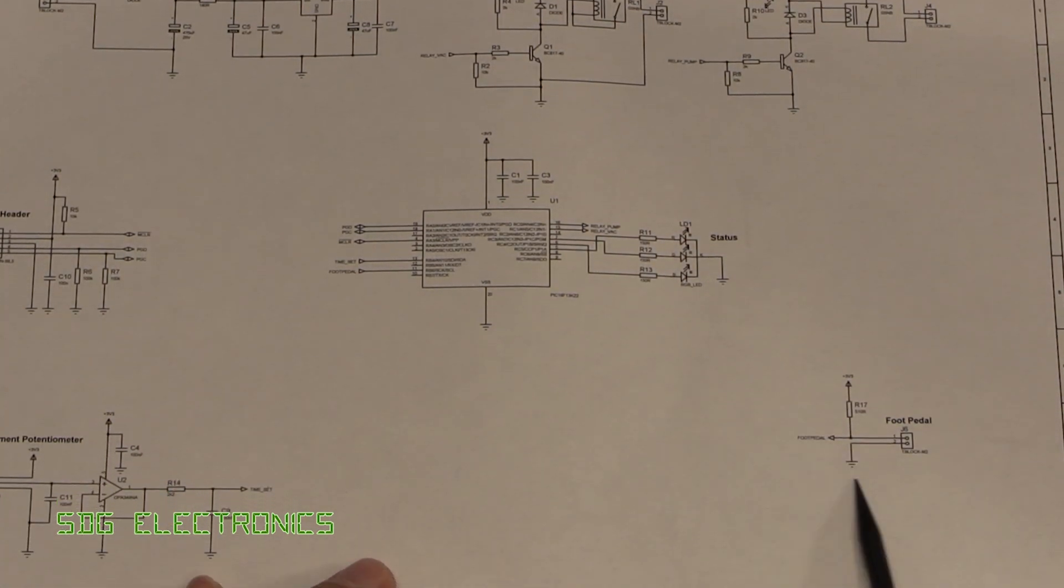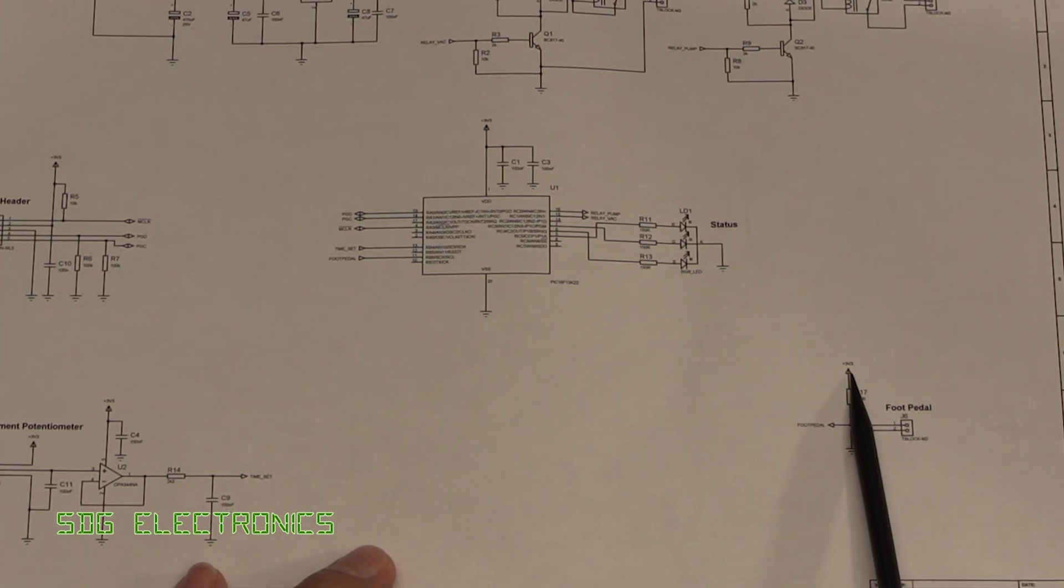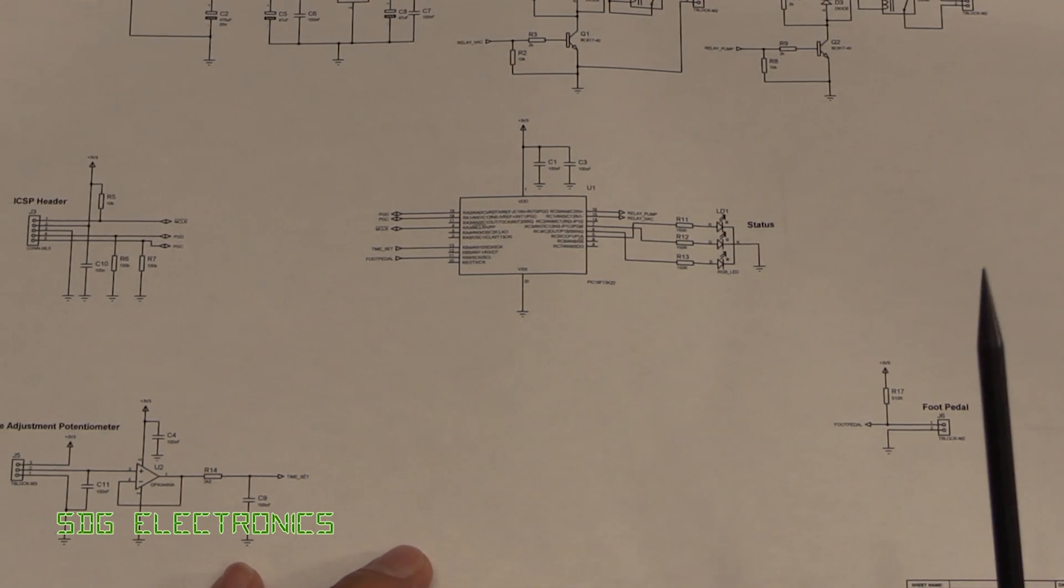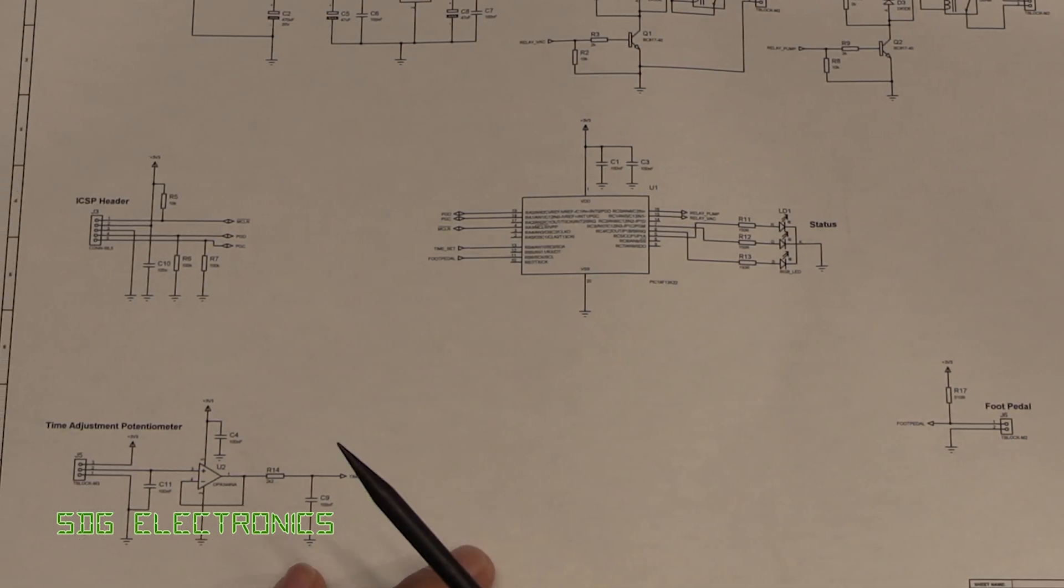And then we've got an input from the foot pedal and that's just a pull-up resistor and the foot pedal itself just switches that down to ground. So it's actually an active low signal into the microcontroller.